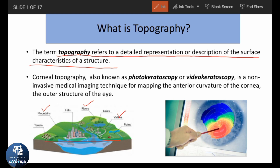Corneal topography, also known as photokeratoscopy or videokeratoscopy, is a non-invasive medical imaging technique. Non-invasive means any medical procedure that does not involve the introduction of an instrument into the body. Corneal topography is used for mapping the anterior curvature of the cornea, or the outer surface of the eye.